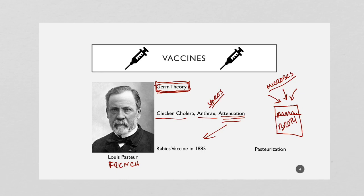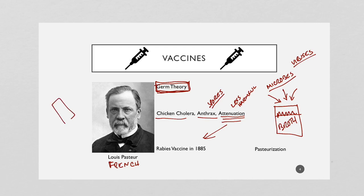Pasteur also experimented by attenuating some of these germs — making them less harmful. Attenuation basically means something is rendered safer: it doesn't cause the full-blown disease, but it does cause an immune response. He knew about microbes but didn't quite understand viruses, since viruses are so tiny — about a thousandth the size of an actual microbe at some points — making them very hard to see under a microscope. But he understood that there was something there.